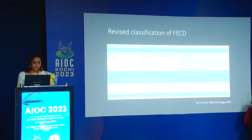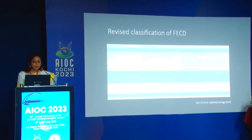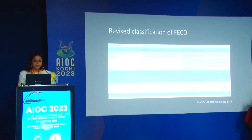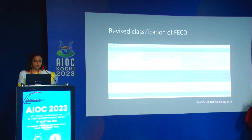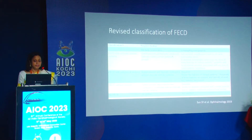Based on these features, the grading is: no Fuchs dystrophy (normal cornea, no guttae); Fuchs endothelial dystrophy with no edema (guttae visible clinically but no Pentacam features); Fuchs dystrophy with subclinical edema (confluent guttae, no clinically definite edema, any two Pentacam features present); and Fuchs endothelial corneal dystrophy with clinically definite edema (visible corneal edema with all three tomographic features present).